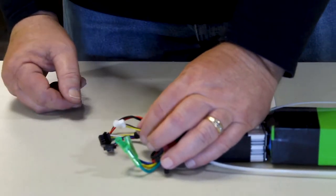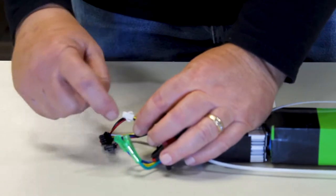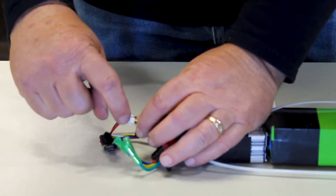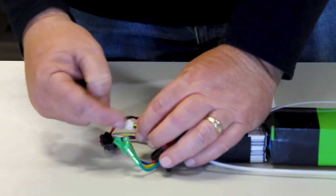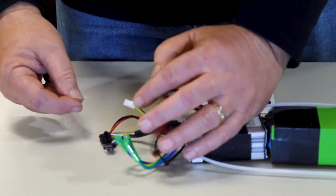The other thing that you'll notice is on the connectors there is a little raised tab. And there's a finger that hooks over that and locks in place so the connector cannot come apart.